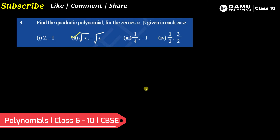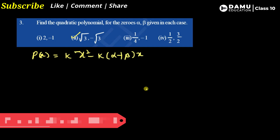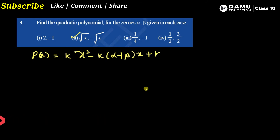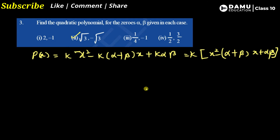Here alpha and beta are given. We should know the generalized form of the expression, which is k times x squared minus k times alpha plus beta times x plus k times alpha times beta. You can factor out k to get k into x squared minus (alpha plus beta) times x plus alpha times beta. This is the formula with the expression, similar to x squared plus bx plus c but multiplied by a constant k.